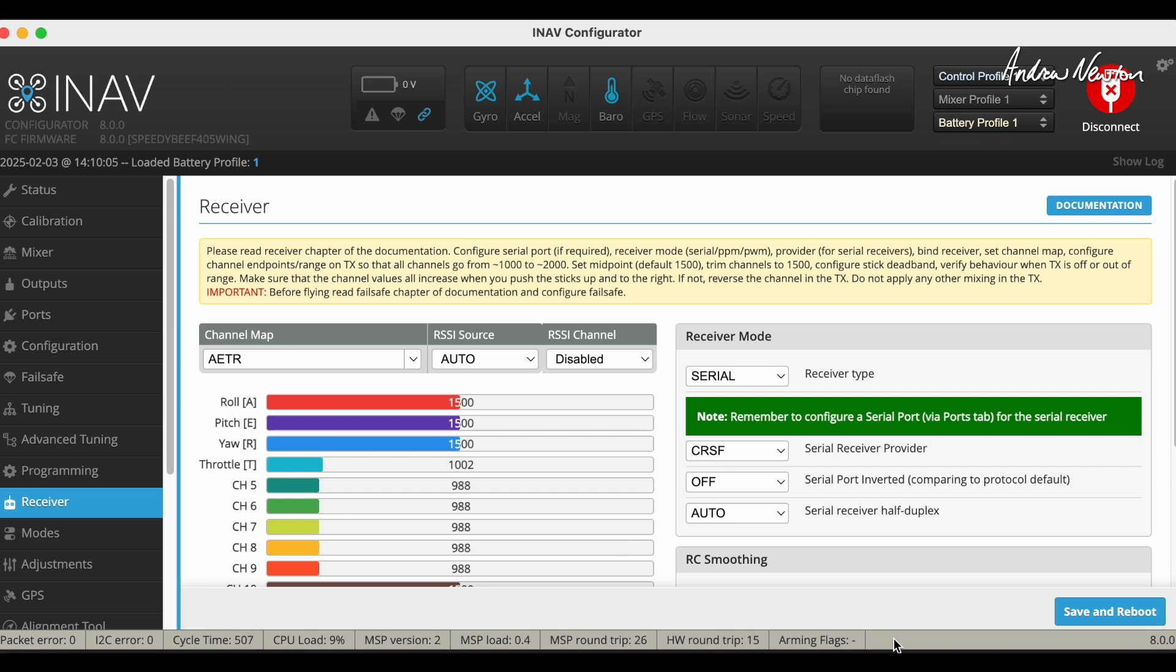Now if we look down the bottom of the iNav configurator page here, we've got a little thing that says arming flags. If all is working well then you'll arm the board and you'll see 'armed' comes up here. I'll disarm now. Now if I pull the receiver out, it will say arming is disabled because of the RC link. That's one clue as to what might be the problem.